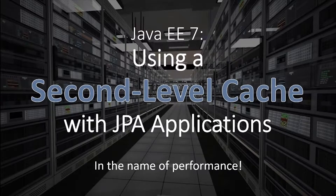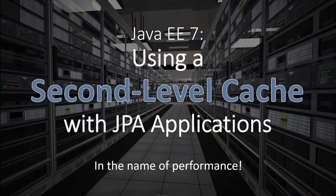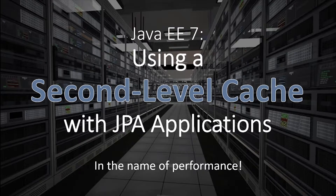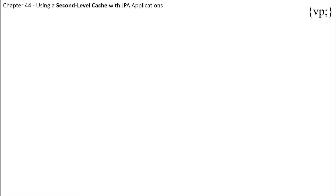Good morning y'all and welcome to your 44th chapter in your Java U7 tutorial series. In this tutorial, we'll explain how to modify the second level cache mode settings to improve the performance of applications that use the Java Persistence API.